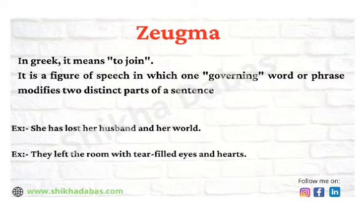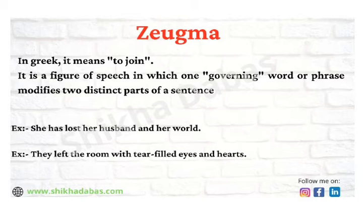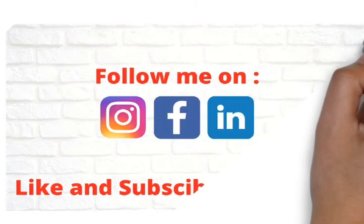The next literary device is zeugma. In Greek it means 'to join.' It is a figure of speech in which one governing word or phrase modifies two distinct parts of a sentence, conveying two different meanings at the same time. For example: 'She has lost her husband and her world' — one statement with two different meanings. Another example: 'They left the room with tear-filled eyes and hurting hearts' — two things expressed within one sentence.